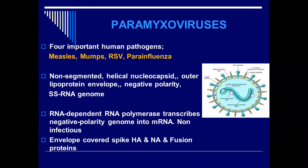It has hemagglutinin proteins, neuraminidase proteins — maybe only one spike if you look at the diagram — and it also has a fusion protein. This fusion protein is very important. It acts to fuse cells together and make multi-nucleated giant cells.